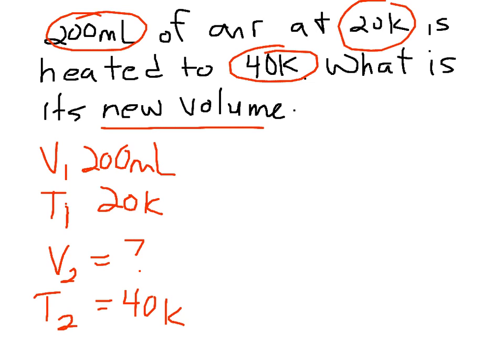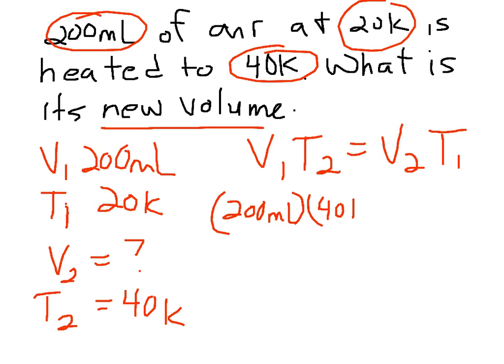At this point, you're just going to plug in numbers. Let's write our equation down. We've got V1 T2 is equal to V2 T1. And then all we do is plug numbers in. So we're going to go 200 milliliters. Make sure you're including units, guys. Parentheses, T2 is 40K. Equals V2, which is, we don't know, so let's just call it V2. And then the other temperature, T1, was 20K.